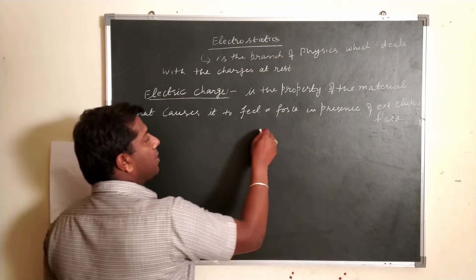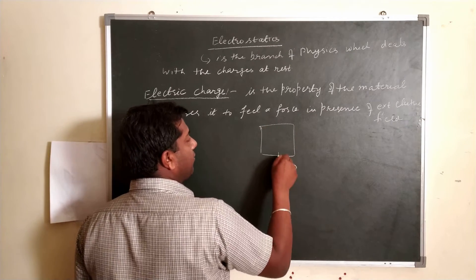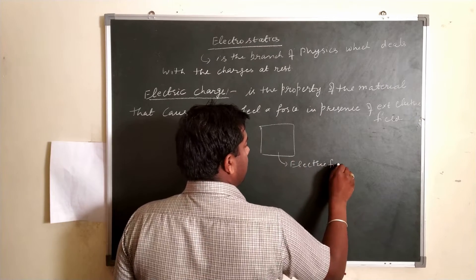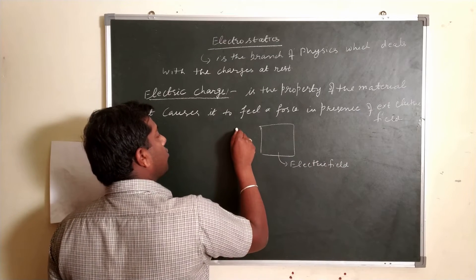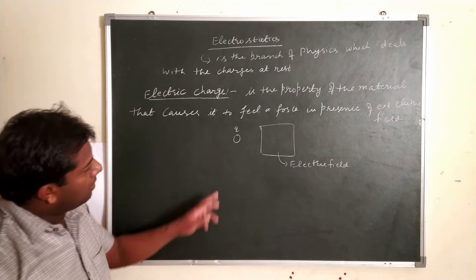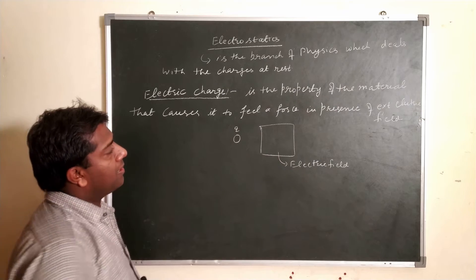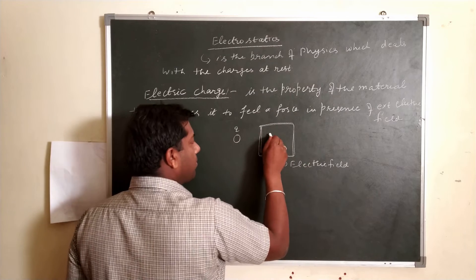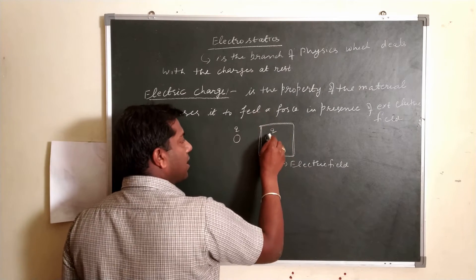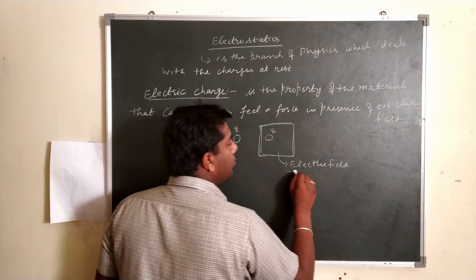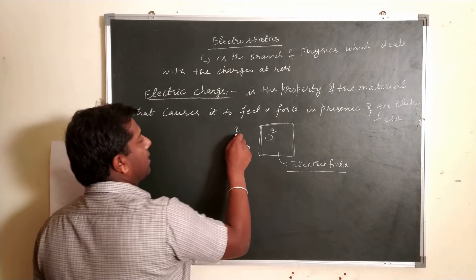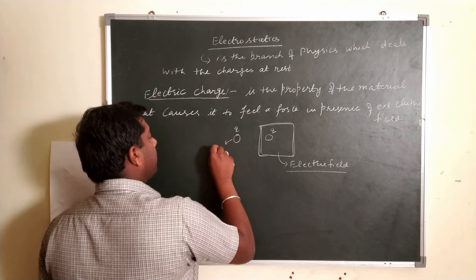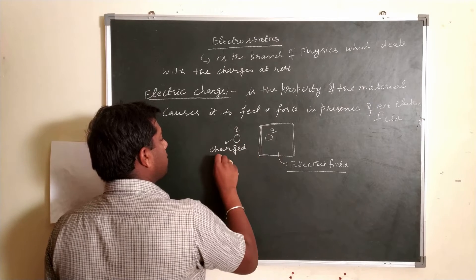Suppose we have a space where the electric field is located. There is an object which has a charge on it. If we take this material into that region, this charge will feel a force due to this electric field. So it means this force is felt because of its charge. This is a charged body.